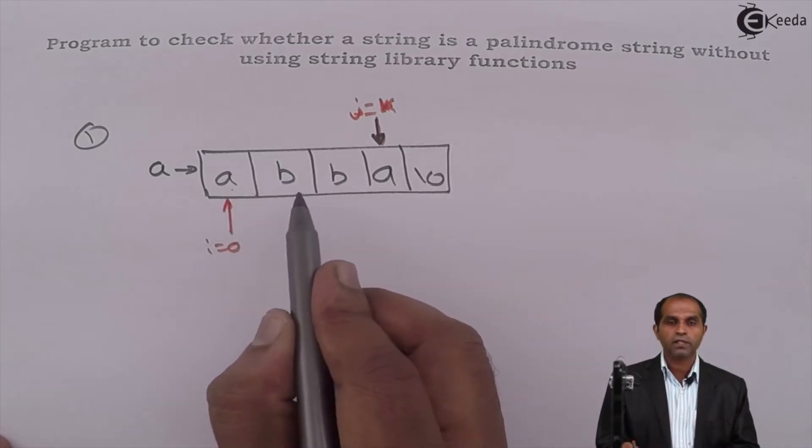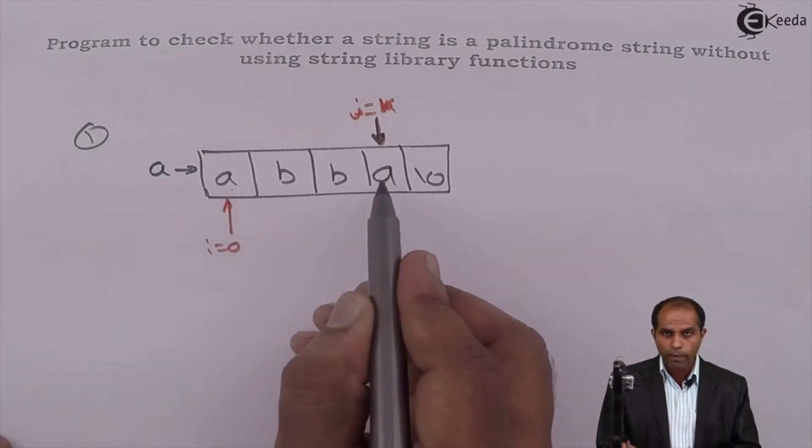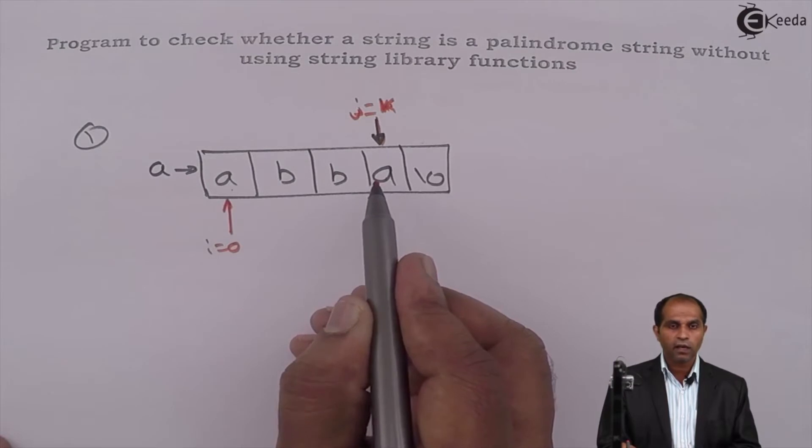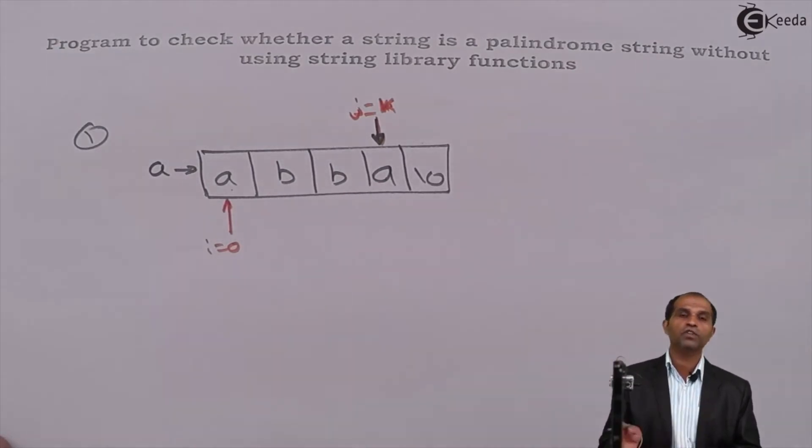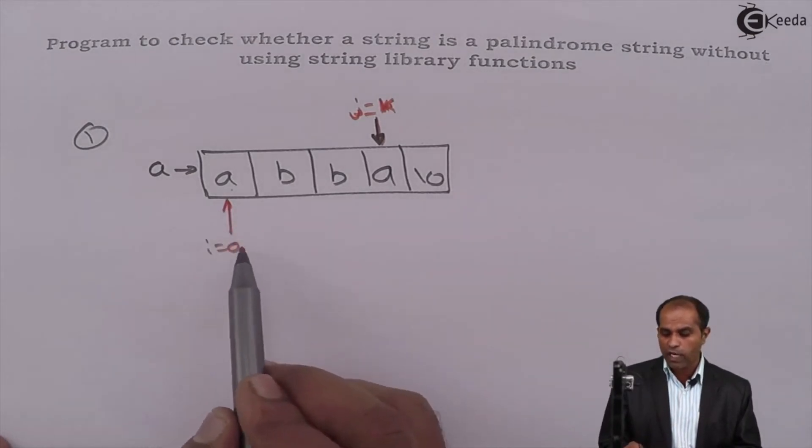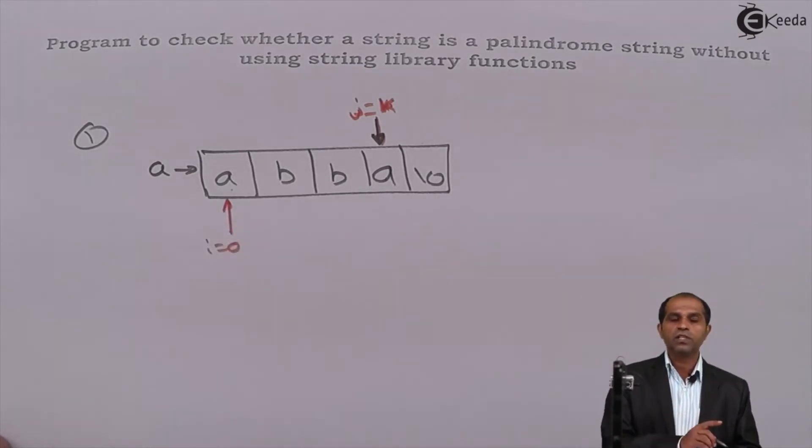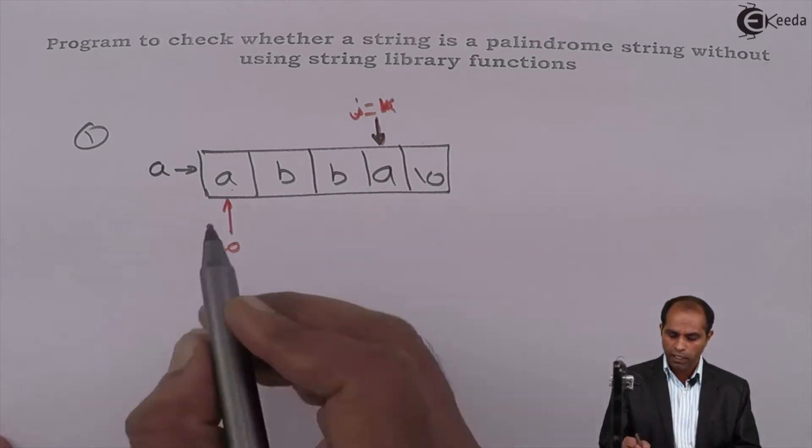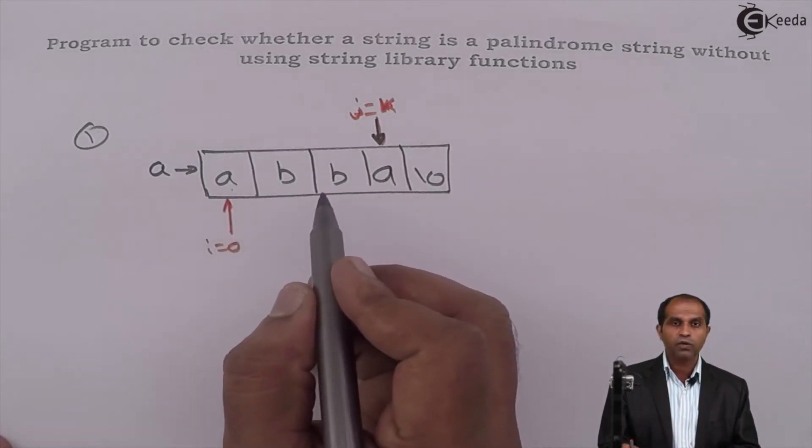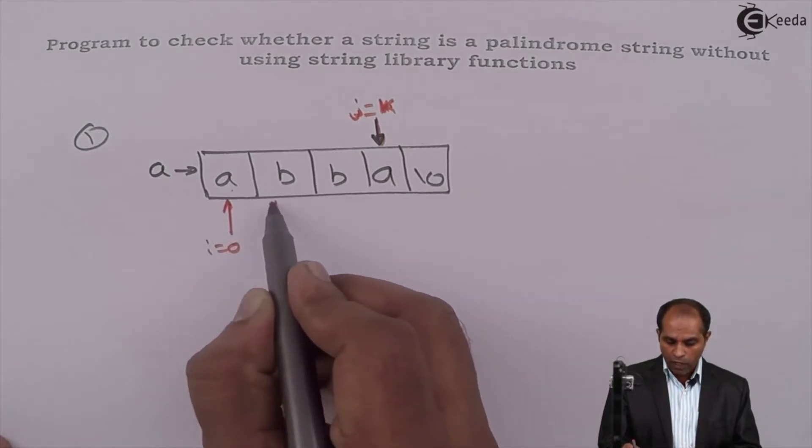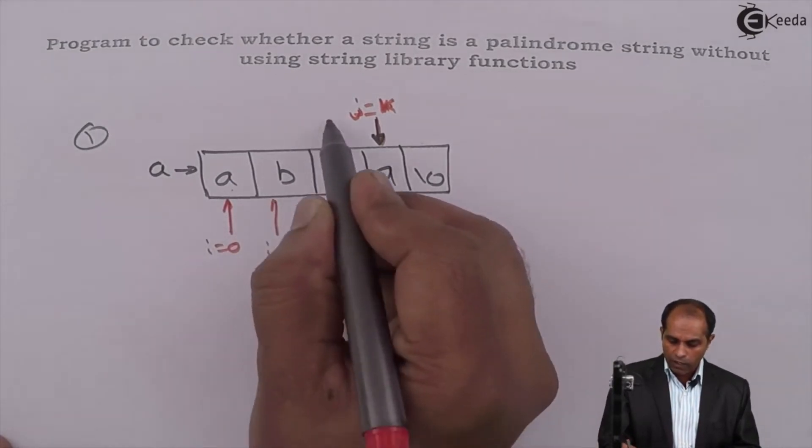You go ahead with the next comparison. If they don't match, then there is no fun in continuing this particular comparison. Stop this particular operation when there is a mismatch between a[i] to a[j] - your strings are not palindrome strings. You should stop immediately at that point itself. So here it matches. If it matches, what I need to do is I need to continue. i becomes 1 and j becomes 2.